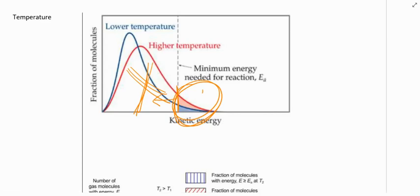So if we have this lower temperature curve, notice that there are only very few particles that have enough energy to collide and react. But as we increase that energy of the particles, we increase the number of particles that potentially could react when they collide.